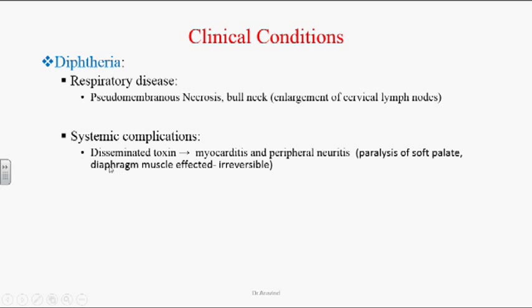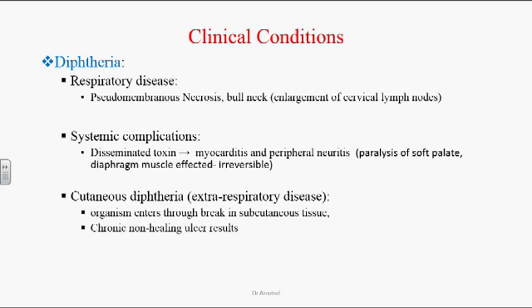Systemic complications: When the toxin disseminates into the bloodstream it causes myocarditis and peripheral neuritis. Peripheral neuritis leads to paralysis of the soft palate and respiratory muscles, especially the diaphragm, causing irreversible respiratory arrest. Cutaneous diphtheria: Organisms enter through breaks in the skin via respiratory droplets from coughing, ultimately causing chronic non-healing punched-out ulcers.